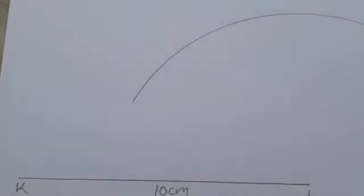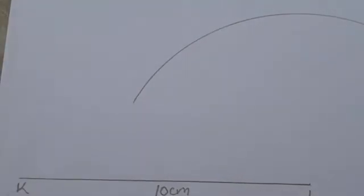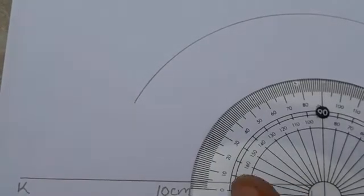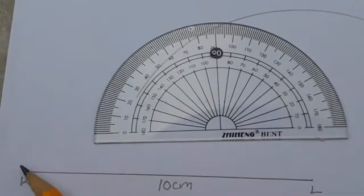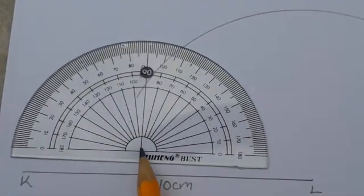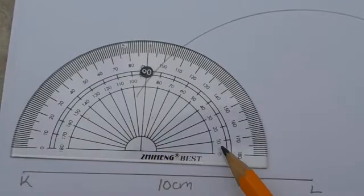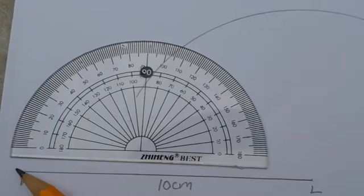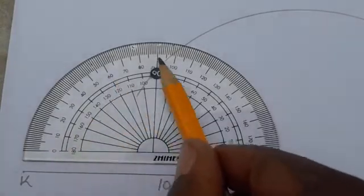To locate where M is, we use the given angle — angle KLM is 120 degrees. Get your protractor. When measuring the angle at L, which is on the right side, you are going to use the outside degrees. Note that the centre point of the protractor should be exactly at L, and the horizontal line of the protractor must be in line with KL.